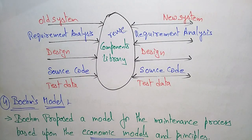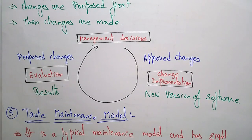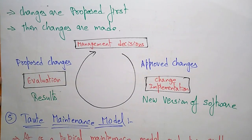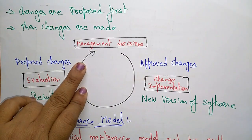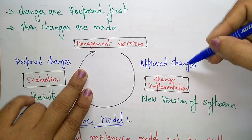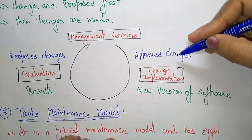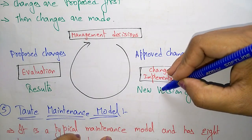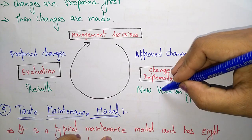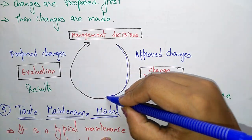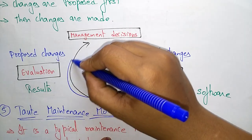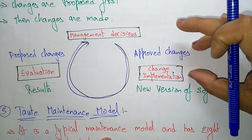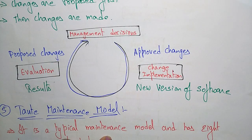Let us see how he constructed that closed loop cycle. First, changes are proposed, then management decisions are taken. He tries to uproot the changes, implement them, and a new version of the software is developed and released.